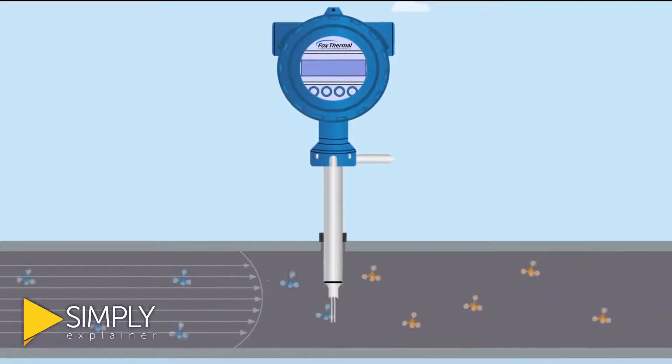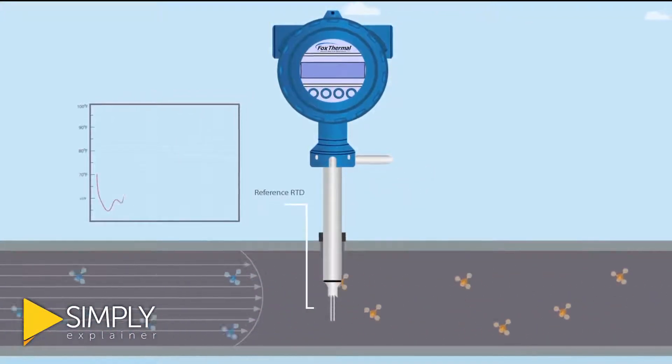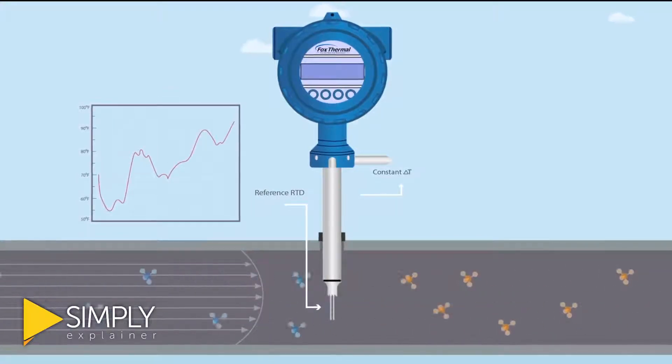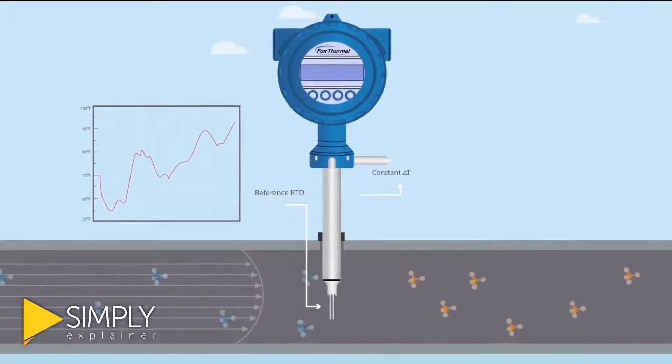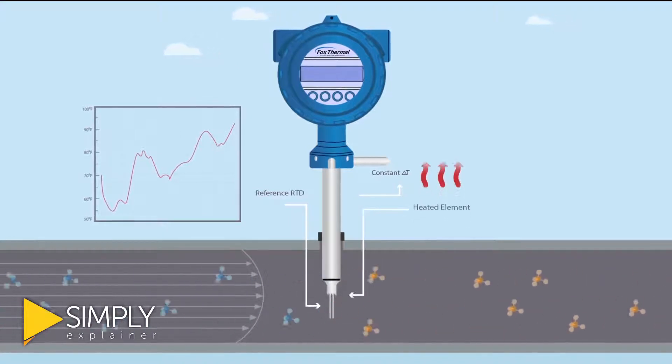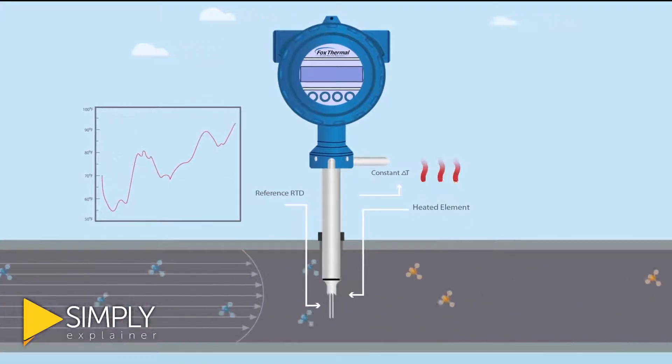Let's look at what is happening in the pipe. There are two RTD elements in contact with the flow of gas. The reference RTD measuring the gas temperature and the heated element which is kept at a constant temperature differential.